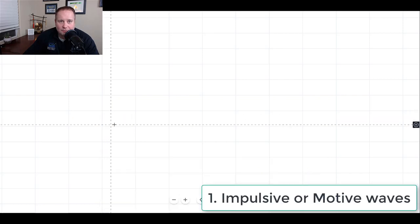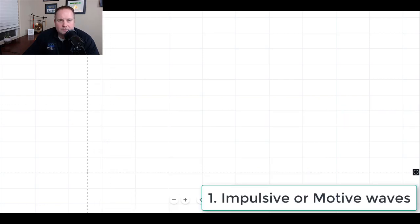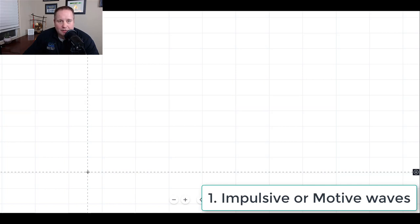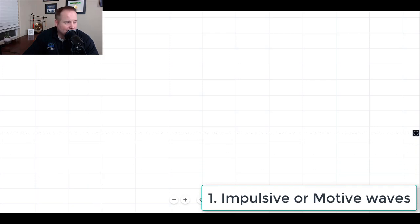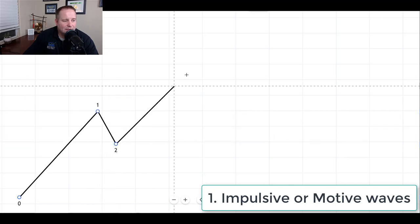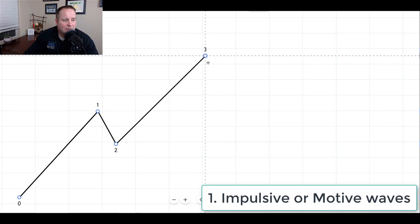Impulsive waves is what we'll start with first. Now impulsive waves are five wave movements on trend with the market. Now what does on trend mean? Well, that means if we're in a bull market, those waves should go up. And if we're in a bear market, those waves should go down. Now as I mentioned, they are a five wave pattern, and they are labeled with either numbers or Roman numerals, and they look like this. So you have a wave one up, a wave two retrace, a wave three up, a wave four retrace, and a wave five up.